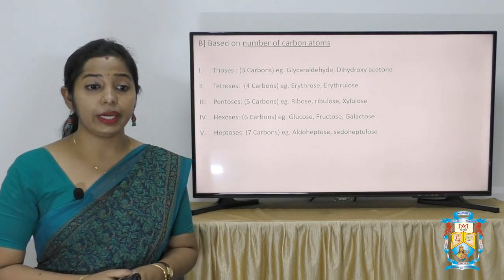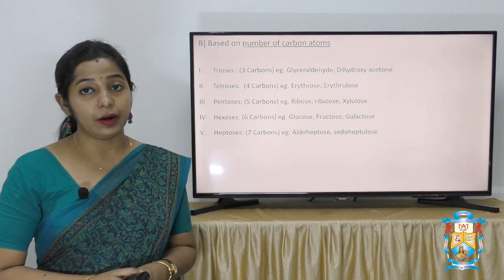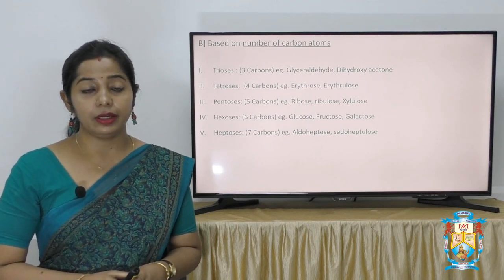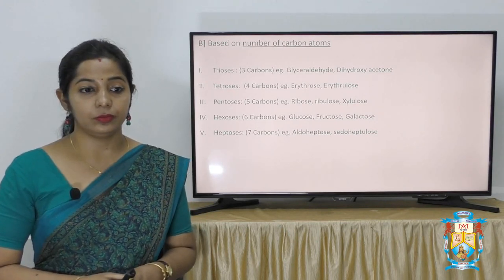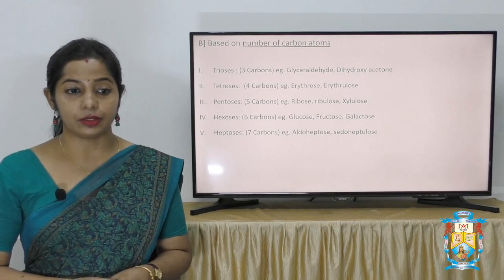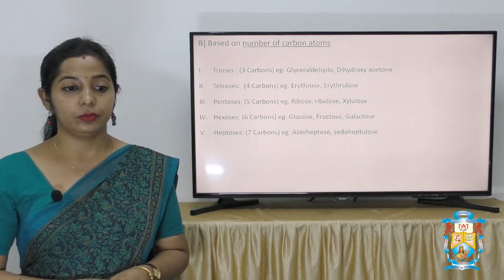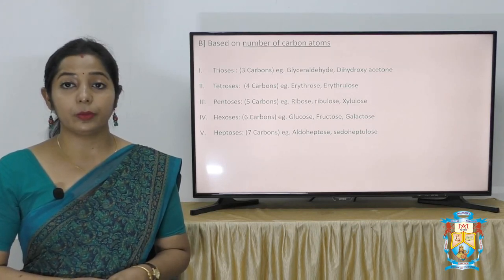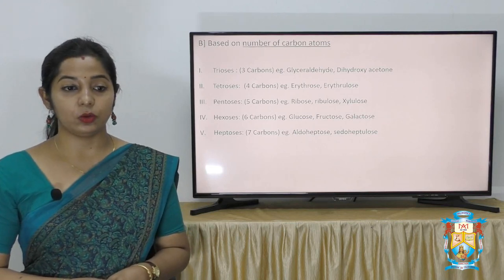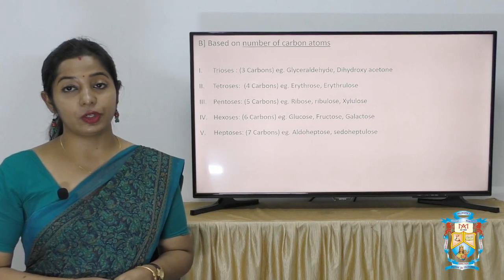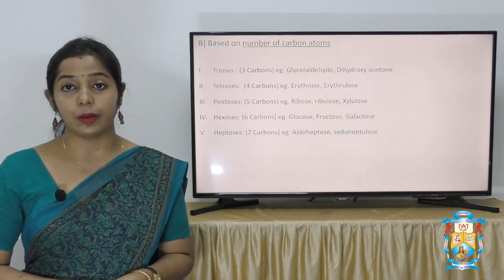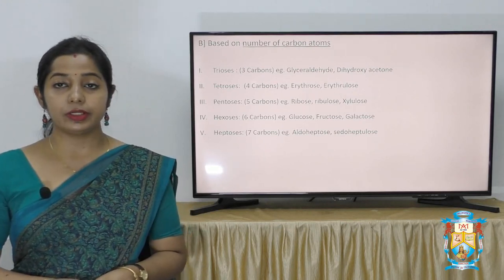Based on the number of carbon atoms, we can also classify monosaccharides. When there are three carbon atoms, they are called trioses — examples are glyceraldehyde and dihydroxyacetone. Tetroses are composed of four carbon atoms — examples are erythrose and erythrulose. Pentoses are monosaccharides composed of five carbon atoms — examples are ribose, ribulose and xylulose. Hexoses are composed of six carbon atoms — examples are glucose and fructose. Heptoses are composed of seven carbon atoms — examples are aldoheptoses and sedoheptulose.